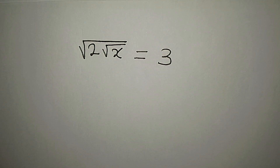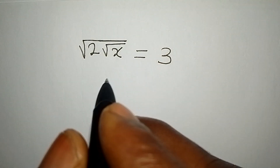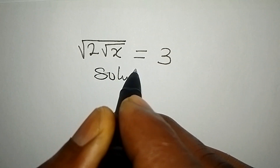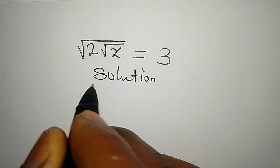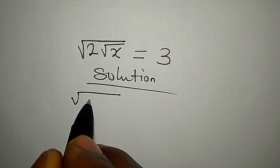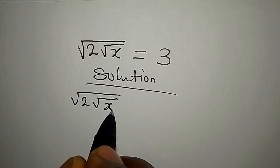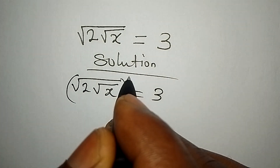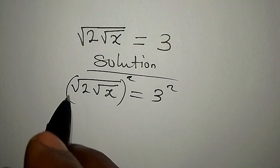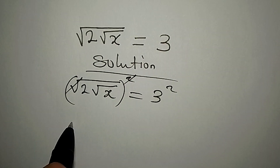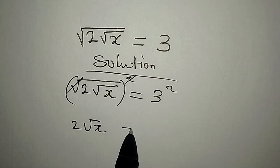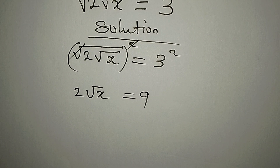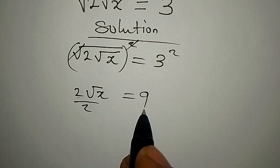Let's provide a solution to this problem. We have the square root of 2 square root of x, equals 3. Square both sides — square this and square this. This will go with this, and 2 square root of x will be equal to 9.